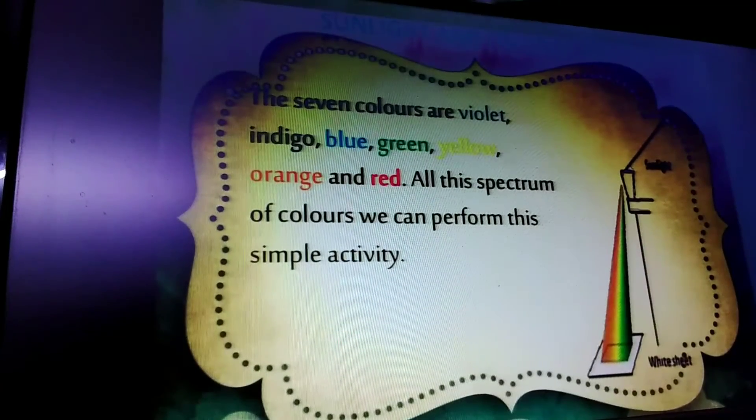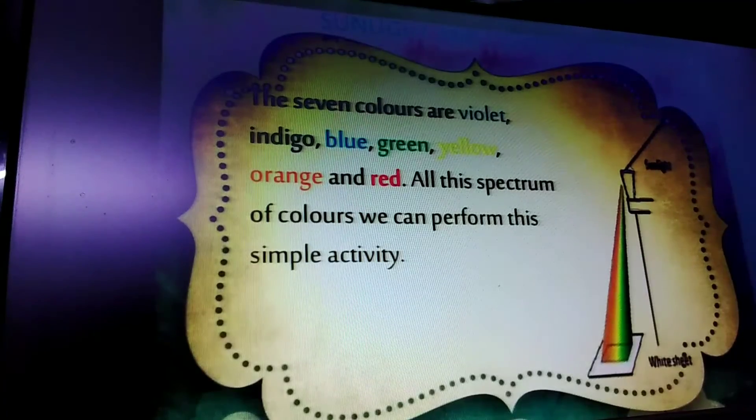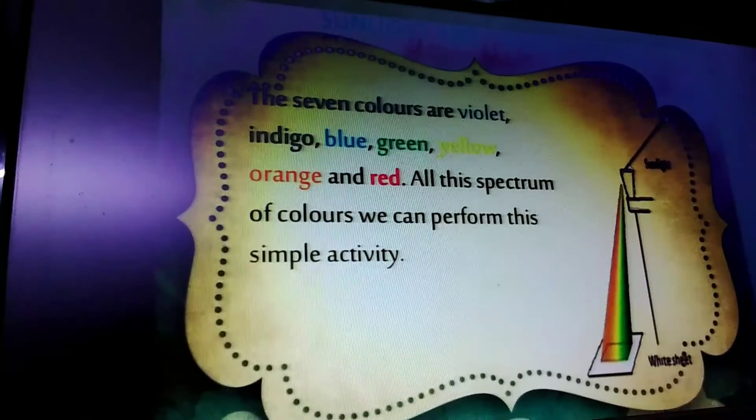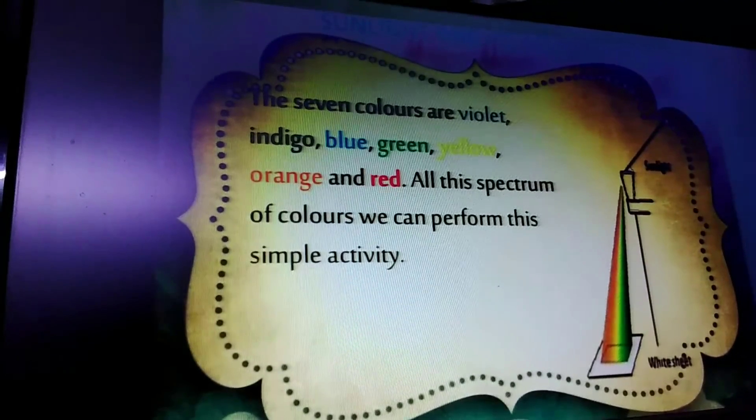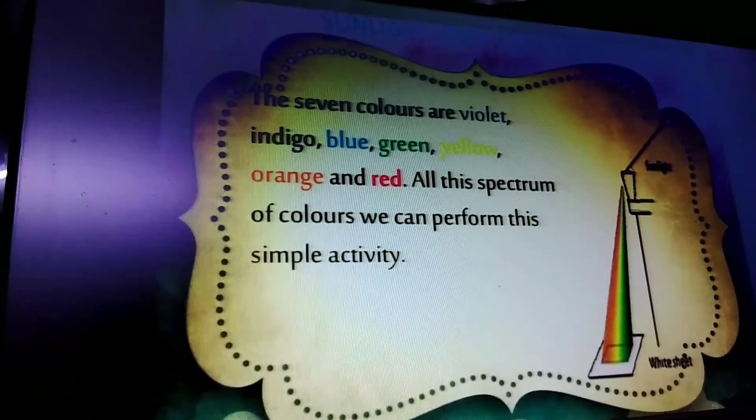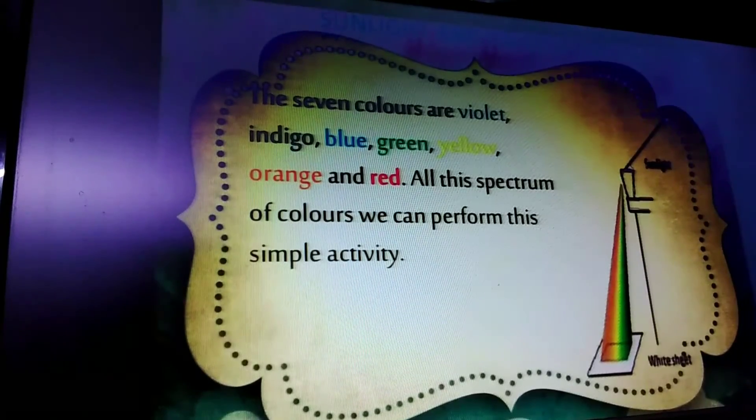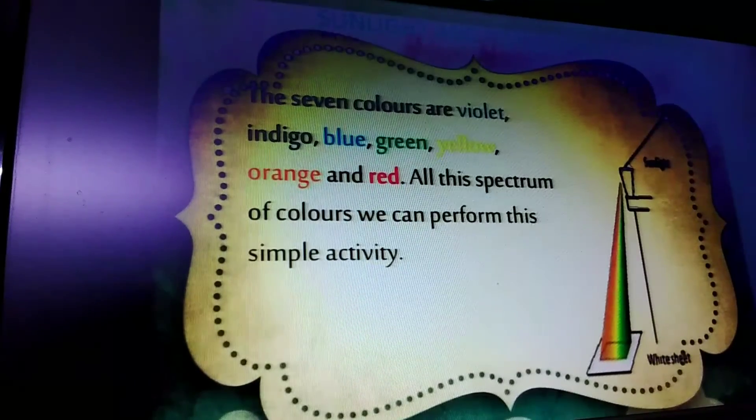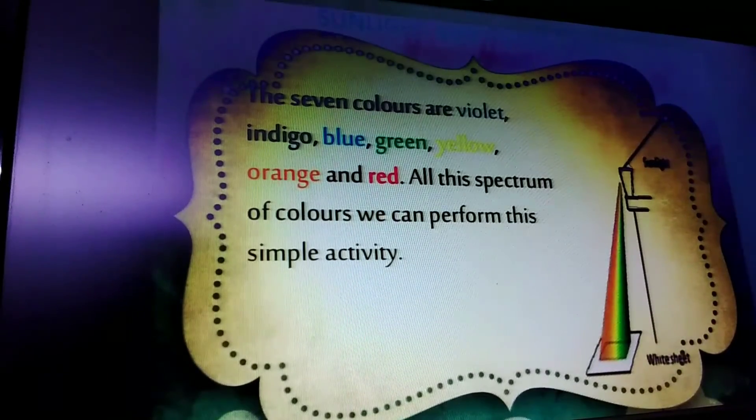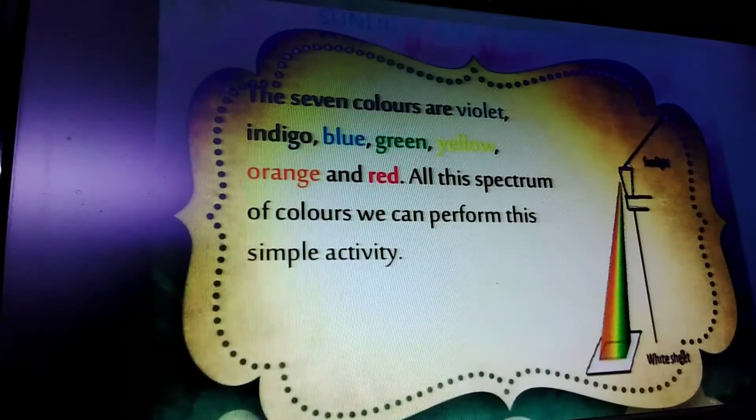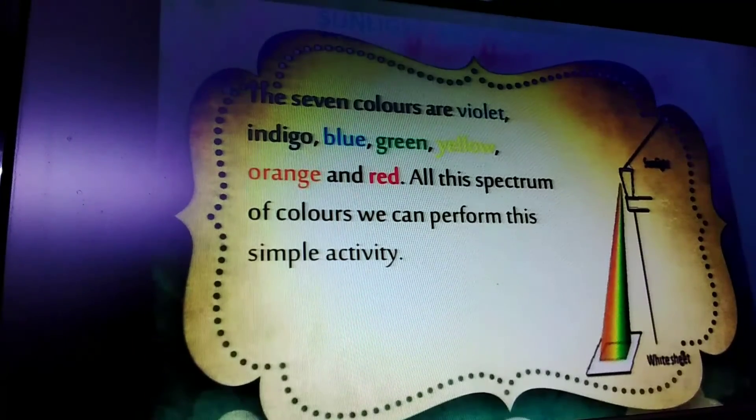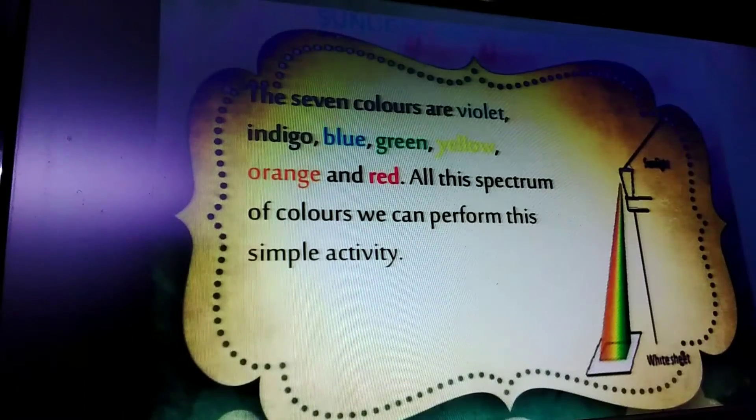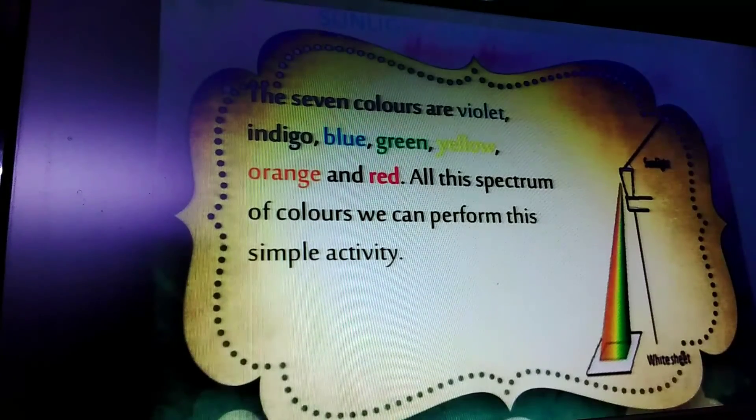Sunlight is white and is a combination of seven colors—VIBGYOR. How do we know this? Pass sunlight through a prism, and it splits into seven colors. This splitting of sunlight when it passes through a prism is known as dispersion.